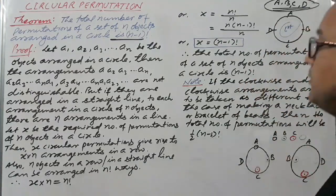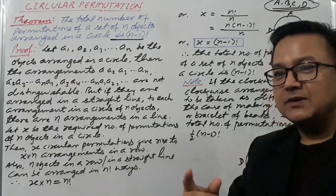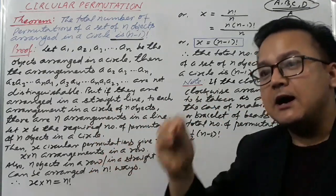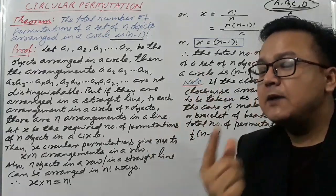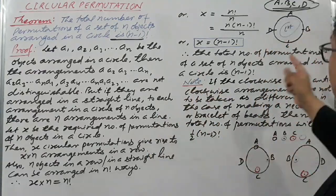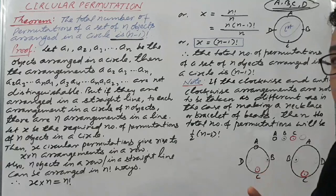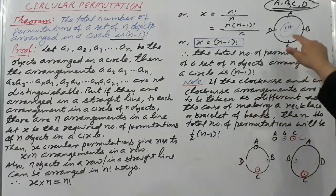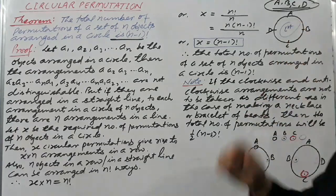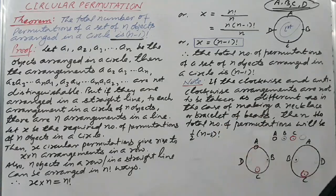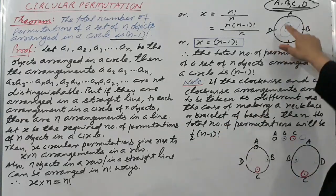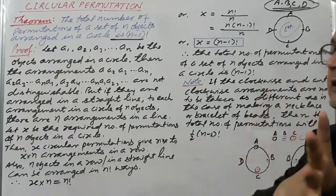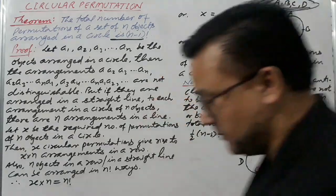But these four ways are not different — they are the same, same circular arrangement. For one circular arrangement with four objects, you can read in four ways.